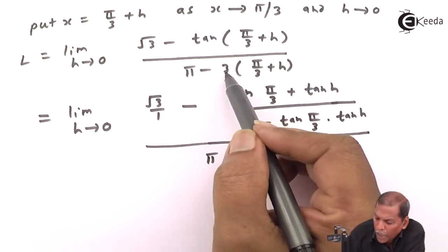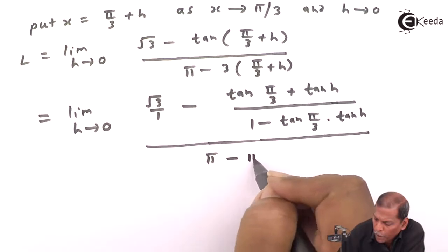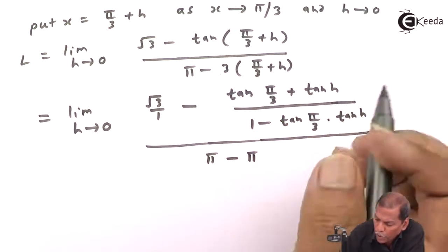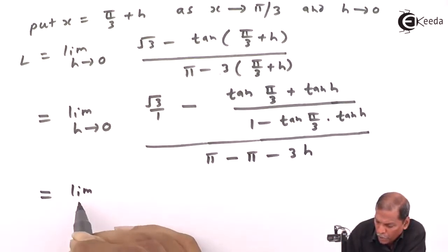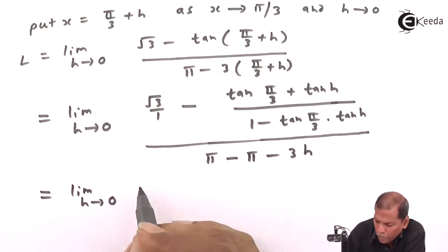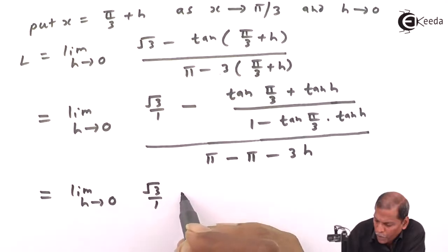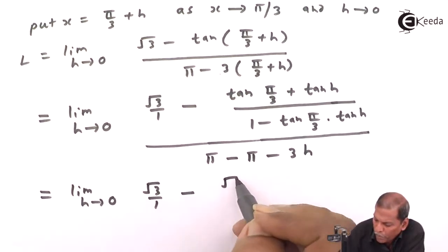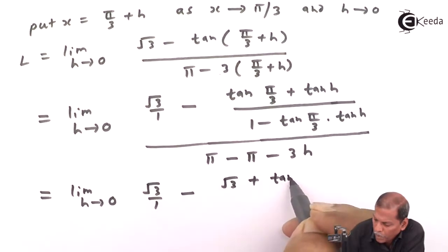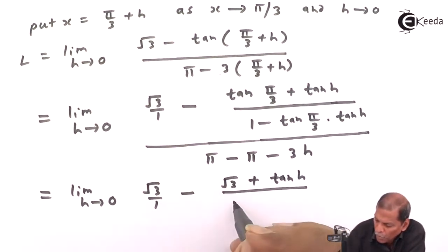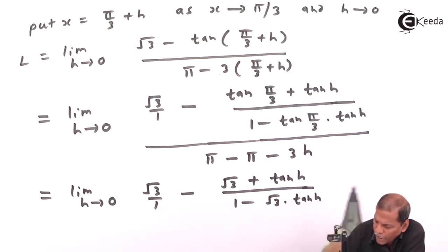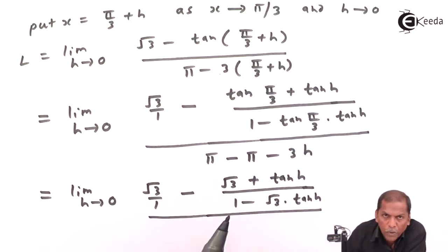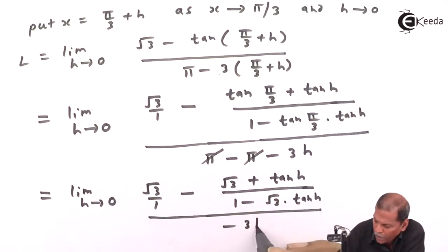In the denominator, −3 · (π/3 + h) gives π − 3·(π/3) − 3h. The π terms cancel, leaving −3h. So we have limit as h tends to 0 of √3 upon (1 − (√3 + tan h) / (1 − √3·tan h)), all divided by −3h.